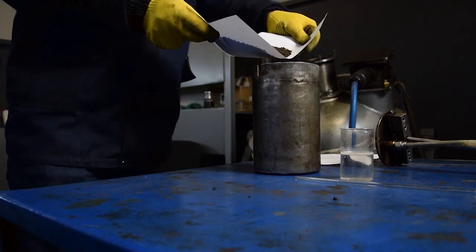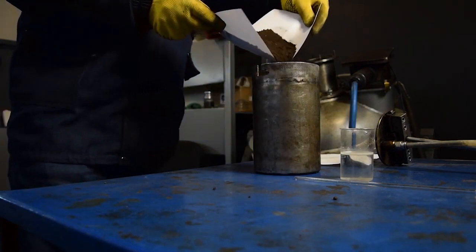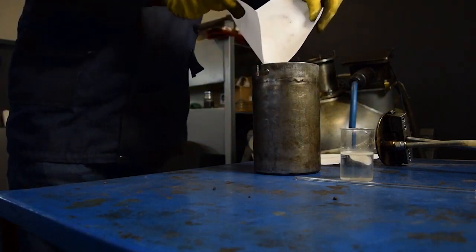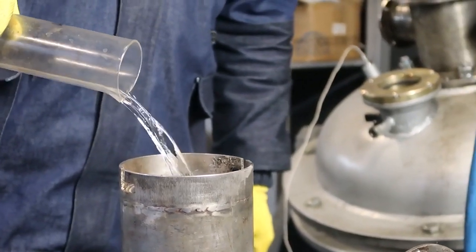We filled in the reaction container of 1.5 liter volume with 250 grams of peat and 500 milliliters of water, having previously dissolved 5 grams of alkali in water.